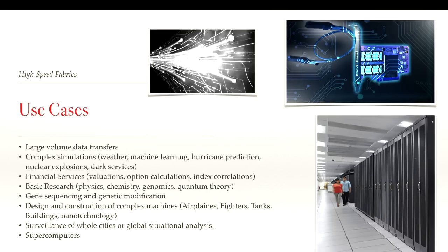So why would you use this? Obviously for large volume transfers — there are complex simulations like weather prediction, machine learning, hurricane prediction, and nuclear explosions. The reason the U.S. can still sustain its nuclear arsenal, despite not doing any real tests, is because they are simulated in a huge supercomputer that uses this technology as their interconnect. There are various intelligence services that make extensive use of this for operations and for analyzing where to find targets. Financial services uses the technology extensively for valuations, options calculation, index correlations, and various other things. Basic research in physics, chemistry, genomics, and quantum theory is all based on clusters that operate with this technology.